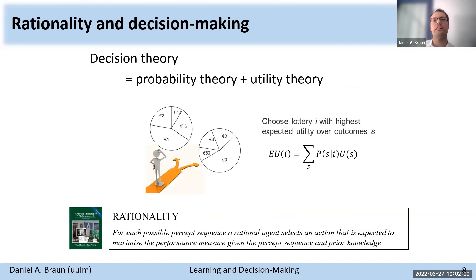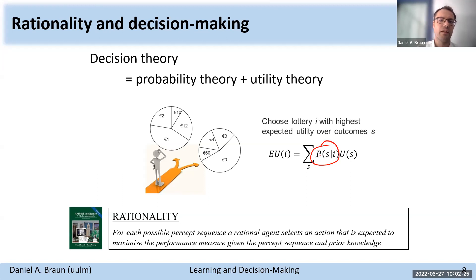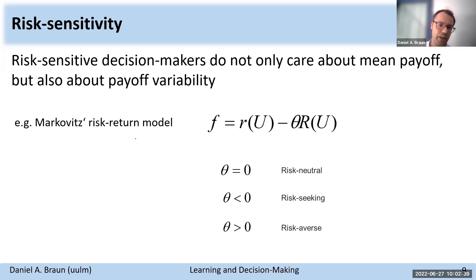The central concept of all these different models is the concept of rationality from economics, which posits that a rational decision-maker should at all times choose an action that maximizes expected performance given current beliefs. In economics, there have also been other ideas of how to choose between different lotteries — one of these is the idea of risk-sensitive decision-makers that don't only care about the mean payoff, but also care about payoff variability.